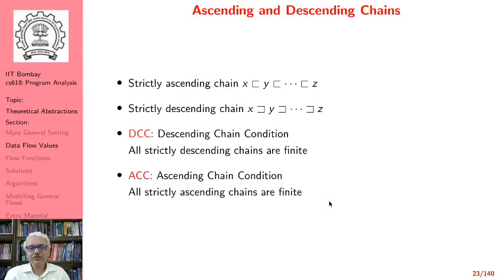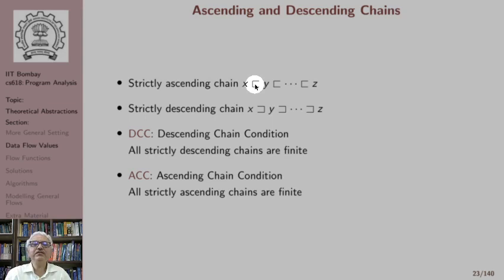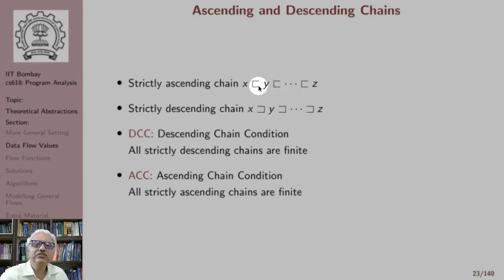Now we talk about an important concept called ascending and descending chains. We define something called a strictly ascending chain where we use a strict relation — the equal-to part is removed, meaning the relation is not reflexive; x is not strictly weaker than itself. Such a sequence of elements is called a chain, and if every relation in this chain is a strict relation, then this is a strictly ascending chain. It is ascending because every element is weaker than the element on its right, so as we move right we get stronger and stronger elements.